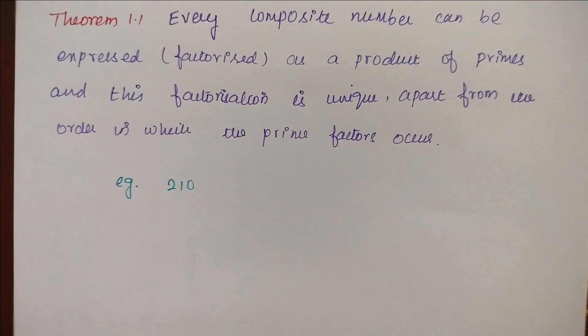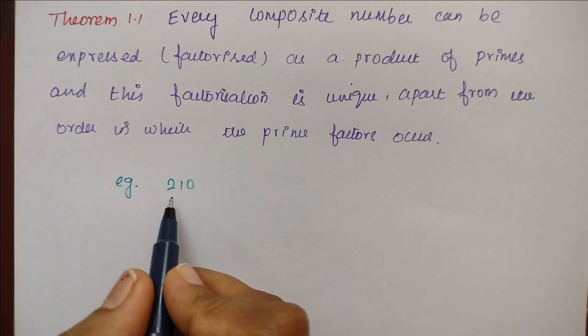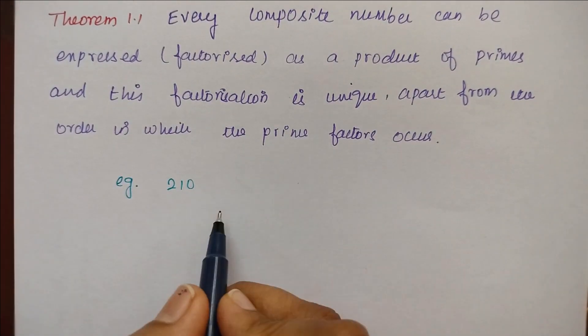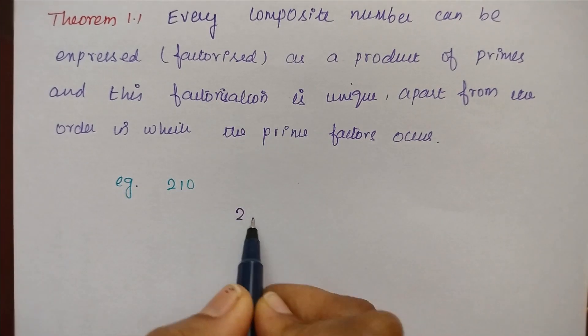So one example will make it clear to you. So take this composite number — we are going to find the prime factors of it.